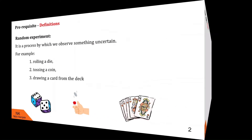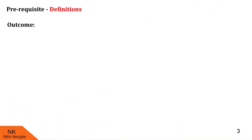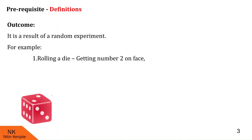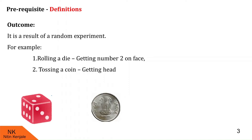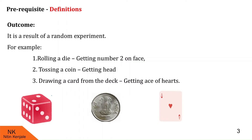The next term is outcome. It is the result of a random experiment. For example, when we roll a die, we can get number 2 on the face. Or when we toss a coin, we can get head. Or when we draw a card from the deck, we can get ace of hearts. So these are outcomes of the experiments discussed earlier.